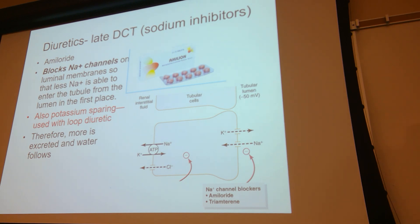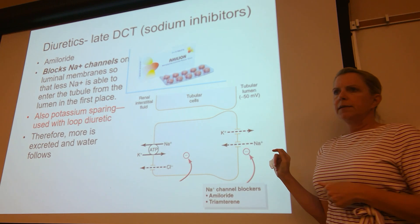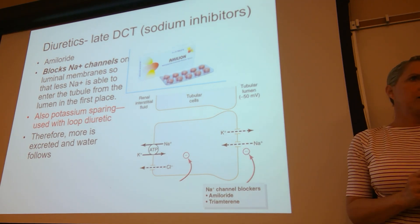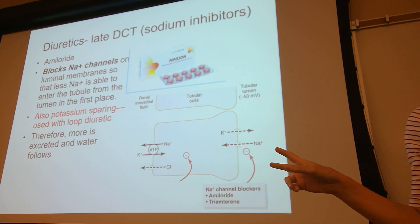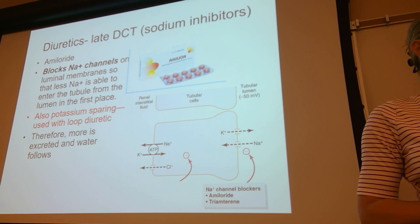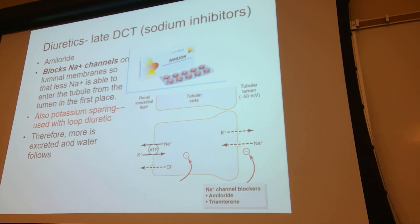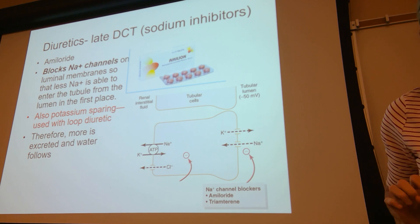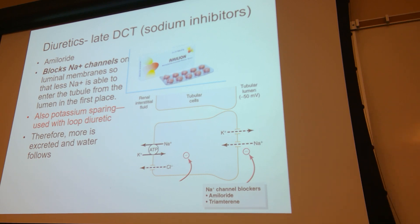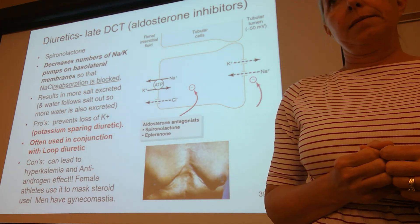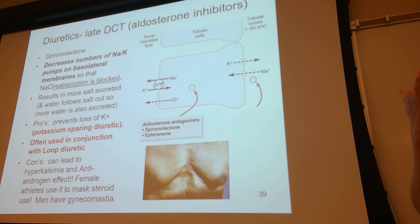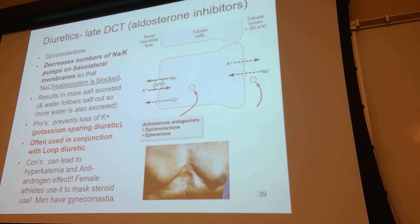Another potassium-sparing diuretic is amiloride. Amiloride blocks the apical side of the cells only, blocking those leak channels. If you're not allowing sodium in, you don't allow potassium out, and that means you're losing less potassium. This would offset furosemide, which leads to more potassium loss. However, if a person is prescribed amiloride or spironolactone alone, they would have a different problem with potassium — because they are potassium-sparing, they might retain too much potassium, and their potassium problem would now be hyperkalemia.